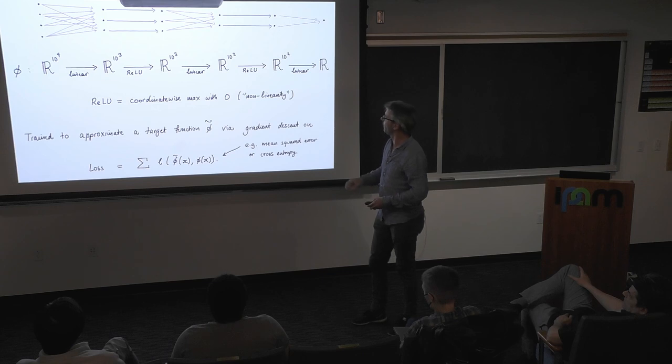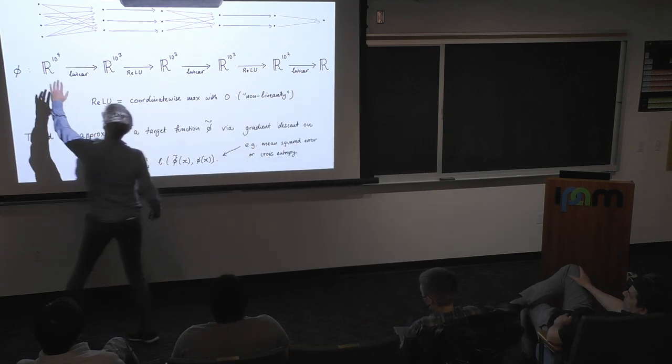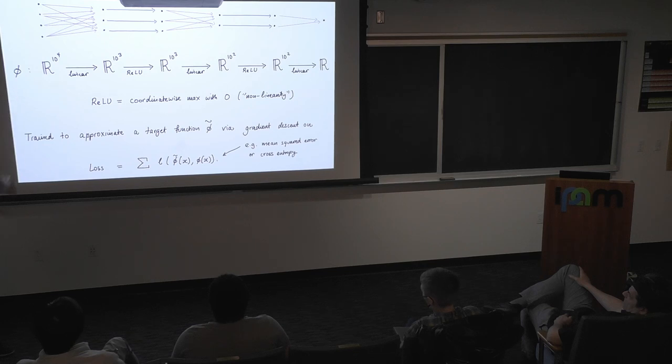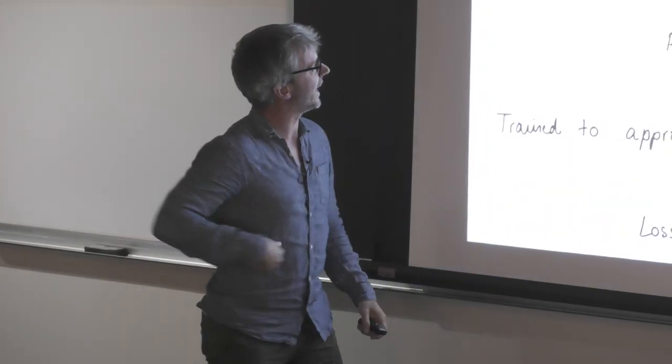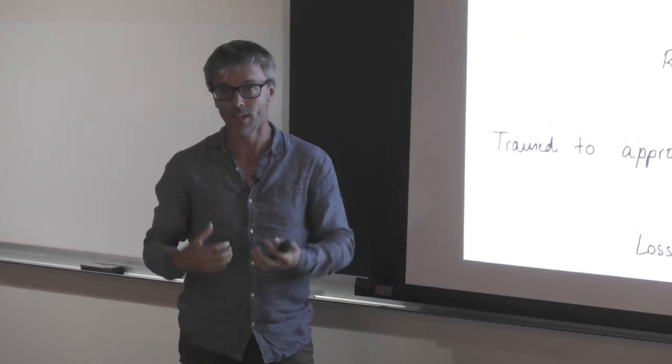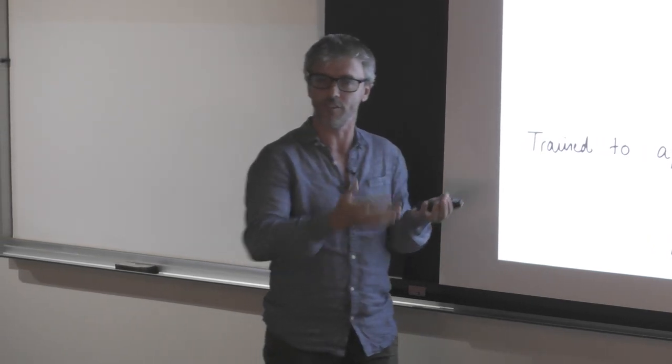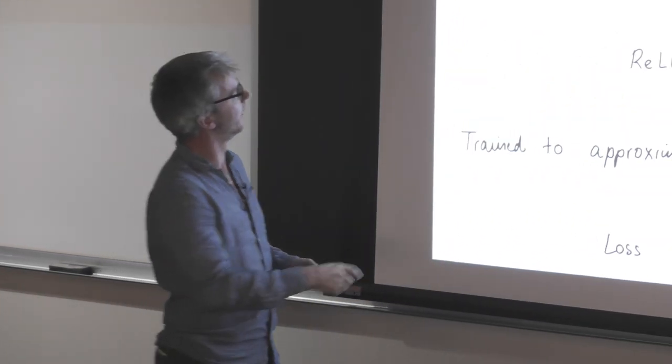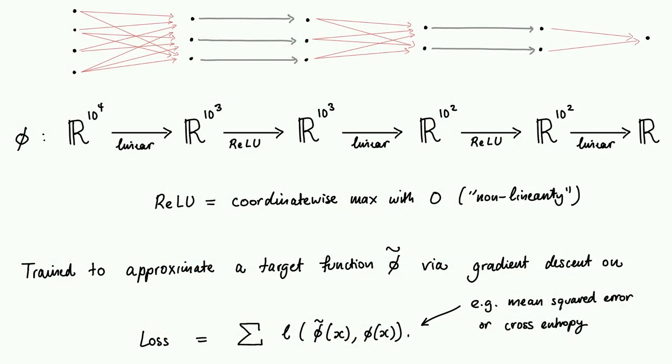So that's the nonlinearity. And then what we do is we have some target function from here to R. And we try to approximate it in this space of functions coming out of this neural net. Typically, we'll do this via gradient descent on some loss function. We won't actually know our target function. But we have a whole lot of values of this function. So we can compute the distance between phi tilde and phi measured by this loss, compute gradients, do a gradient update, repeat. And that's training.